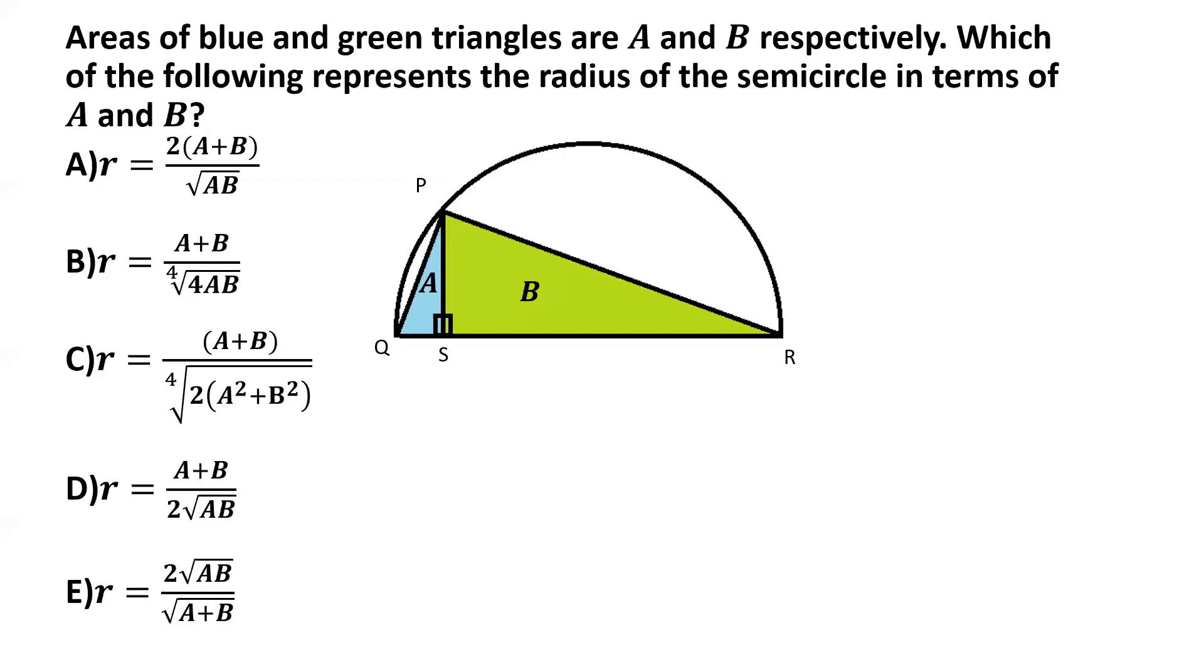Now we know that triangle PQR has to be a right angle triangle. Why? Because angle QPR is an angle in a semicircle. And we know that an angle in a semicircle has to be 90 degrees. So that makes triangle PQR a right angle triangle with the right angle being at P.